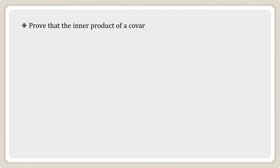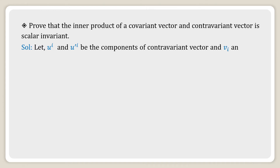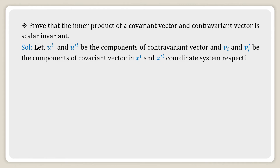Prove that the inner product of a covariant vector and a contravariant vector is a scalar invariant. Let u^i and u'^i be the components of a contravariant vector, and v_i and v'_i be the components of a covariant vector in the x^i and x'^i coordinate systems respectively. We consider both suffixes in terms of i because we are taking the inner product of these two vectors.